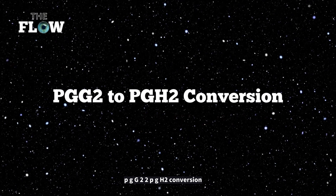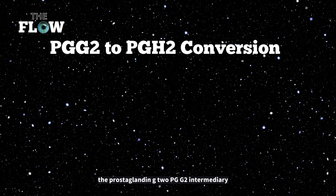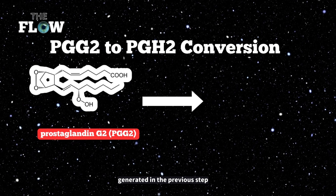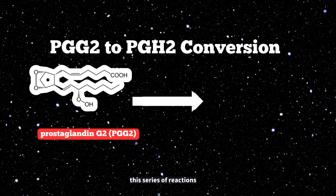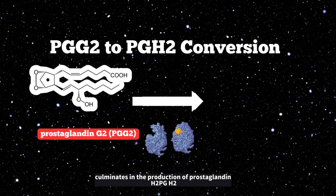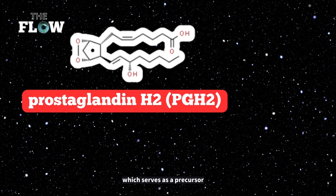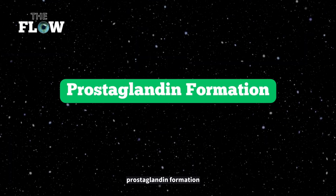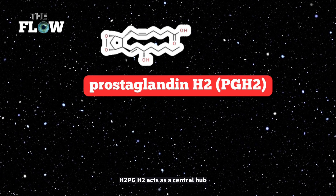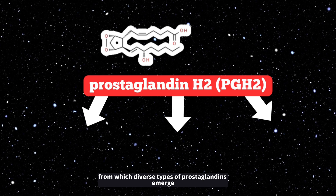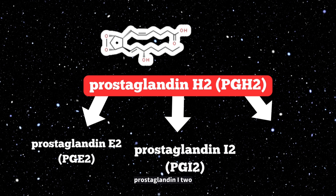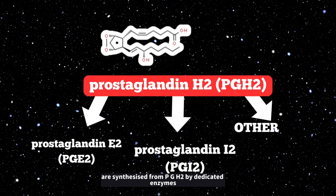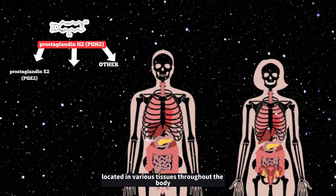PGG2 to PGH2 conversion: the prostaglandin G2 (PGG2) intermediary undergoes further enzymatic transformations catalyzed by COX enzymes. This series of reactions culminates in the production of prostaglandin H2 (PGH2), which serves as a precursor for various types of prostaglandins. Prostaglandin H2 acts as a central hub from which diverse prostaglandins — including prostaglandin E2 (PGE2) and others — are synthesized by dedicated enzymes in various tissues.